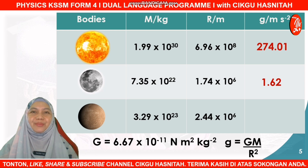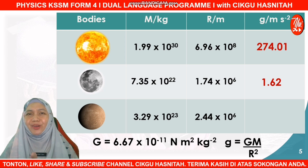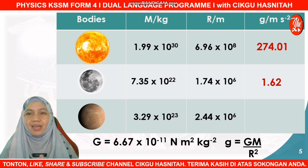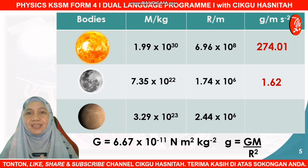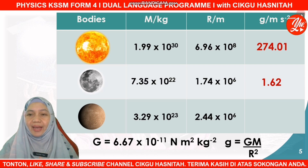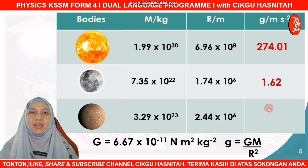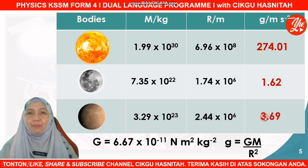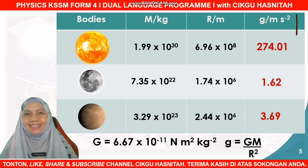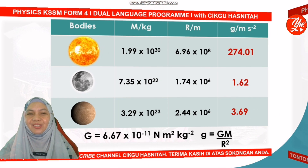How about Mercury? Can you give it a try? With a mass of 3.29 × 10²³ and a radius of 2.44 × 10⁶, it will give us a gravitational acceleration of 3.69 m/s². Easy, right? Now try the next three.